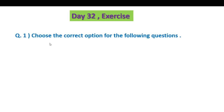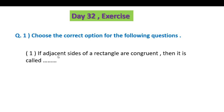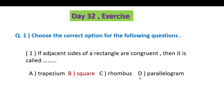Question 1. Choose the correct option for the following questions. If adjacent sides of a rectangle are congruent, then it is called a square. When a rectangle has adjacent sides congruent, the answer is B — square.